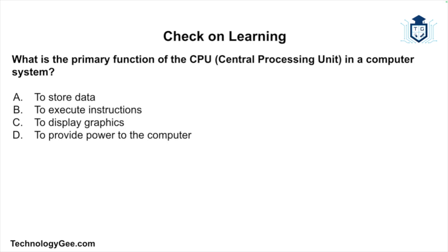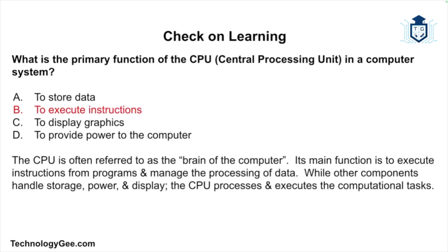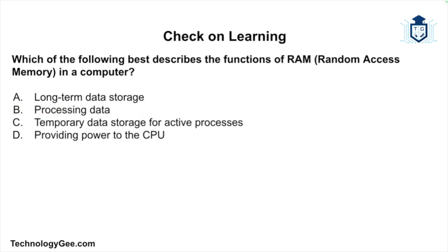Next question: What is the primary function of the CPU or Central Processing Unit in a computer system — is it to store data, to execute instructions, to display graphics, or to provide power to the computer? The correct answer is it executes instructions. The CPU is referred to as the brain of the computer; its main function is to execute instructions from programs and manage the processing of data, while other components handle storage, power, and display.